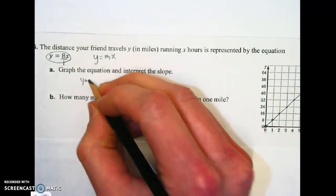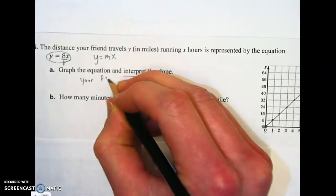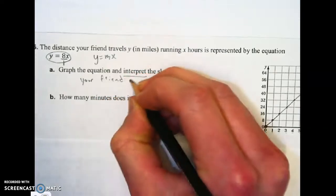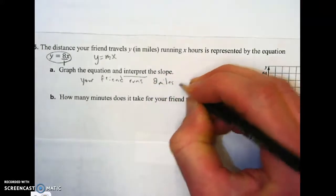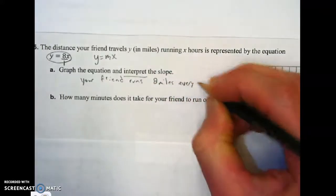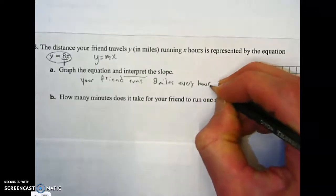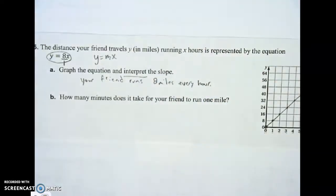Your friend runs 8 miles every hour. That is interpreting the slope, saying what it means.